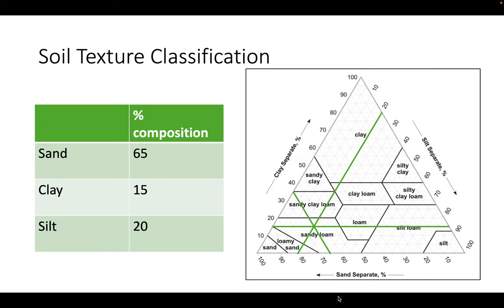The point at which all three lines intersect is the texture of the soil. So in this case, we have a sandy loam.